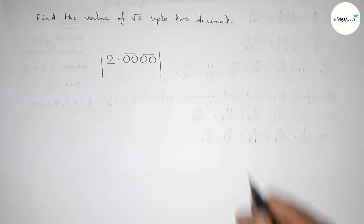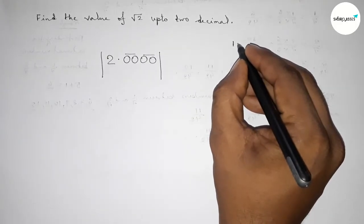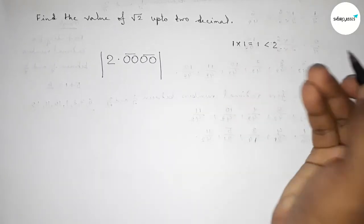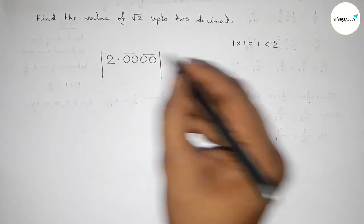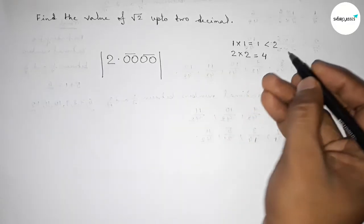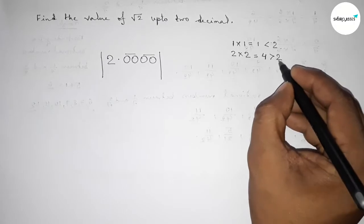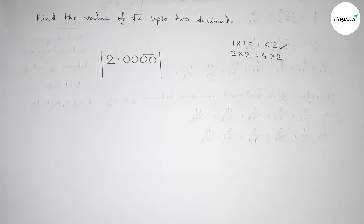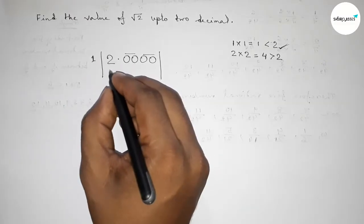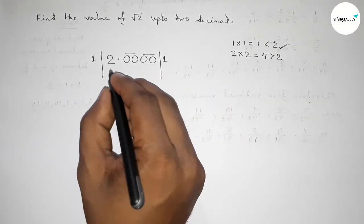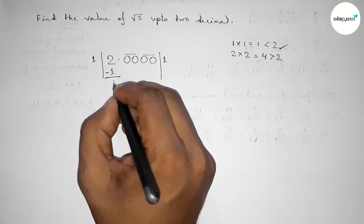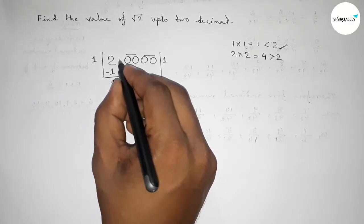Now discussing an important concept: we have to choose a number and multiply it by the same number. Taking 1 and multiplying by 1 gives 1×1=1, which is less than 2. If we take 2 and multiply by 2, that gives 2×2=4, which is greater than 2. So 1 is the closest and less than 2, so we take 1. One times one equals one.